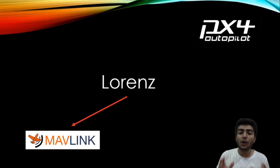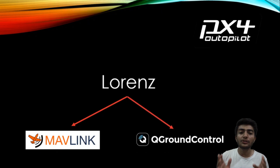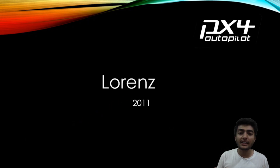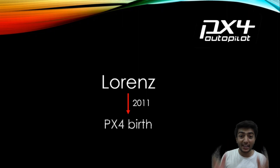Lorenz also developed the MAVLink protocol, which is used for communication between UAVs and ground control stations. It was soon picked up by the open source community and used in other autopilot projects such as Ardupilot — yes, Ardupilot also uses MAVLink. QGroundControl was also developed by him for Linux and is now available for Windows too. In 2011, struggling with an architecture that wasn't scaling well, Lorenz and his team scrapped everything built over the previous three years and did a complete rebuild from scratch. The fourth rewrite of the PX4 flight controller software finally delivered the quality Lorenz wanted, and PX4 was born.